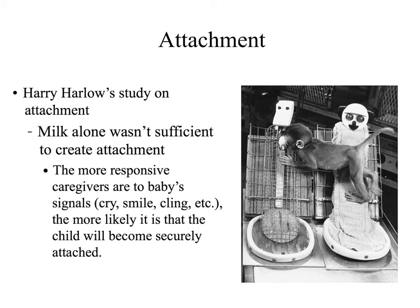Because of issues with imprinting and that theory, other researchers studied attachment in different forms. Here you can see a little monkey separated at birth from his mother, given two figures in his cage. One figure is an unattractive cage-like structure with no facial features but has a formula — the food. The other, on the right side, has a much more human-like face with a smile and big eyes, and also has a warm cloth around it.